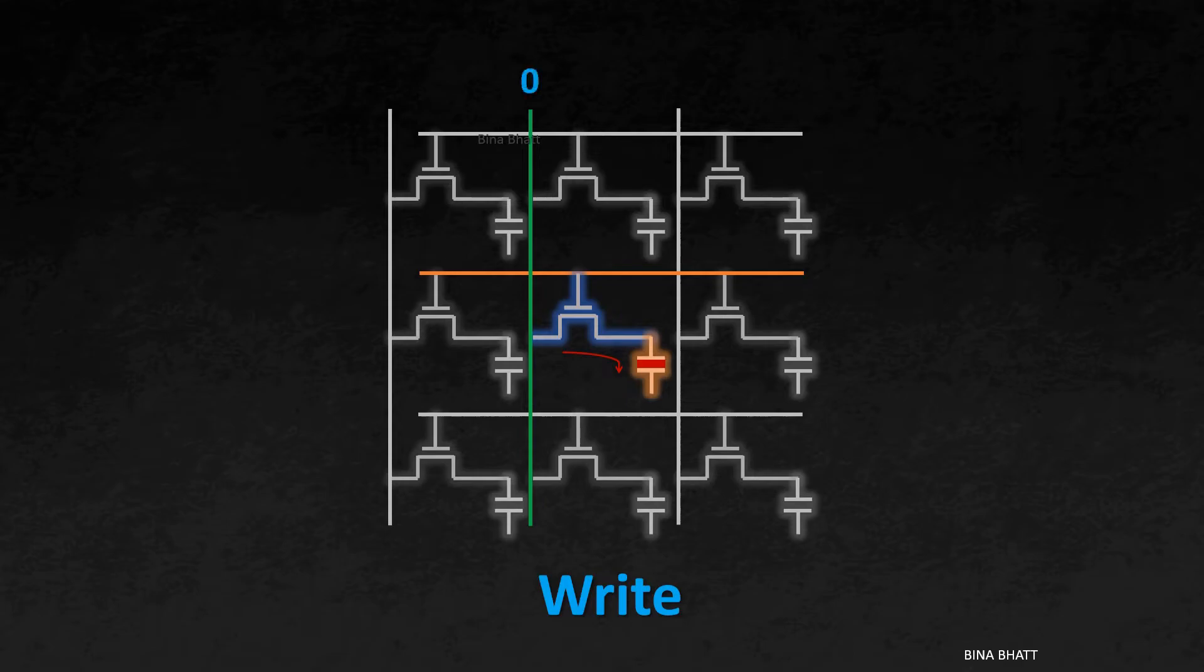Now, for bit value of 0, the capacitor is made to discharge via the bit line. So, that's write operation.